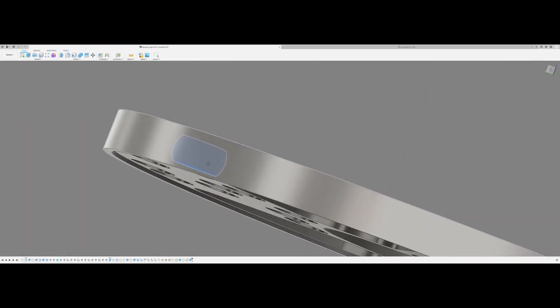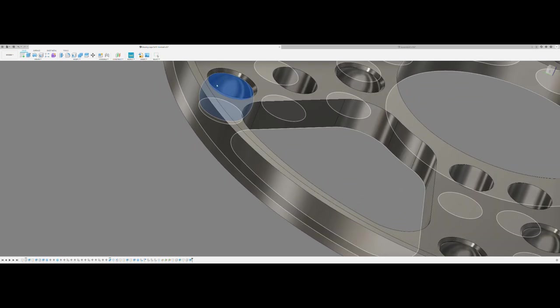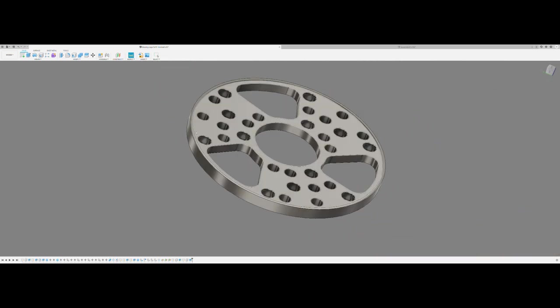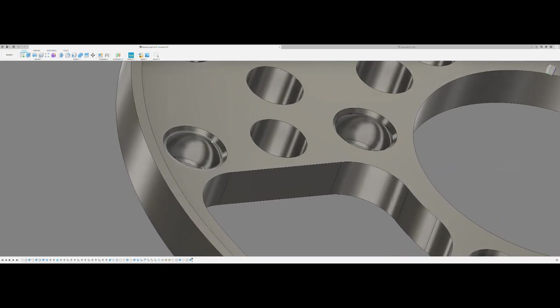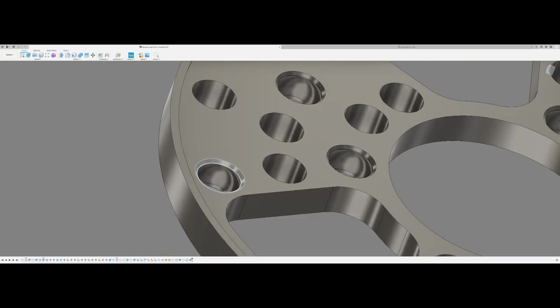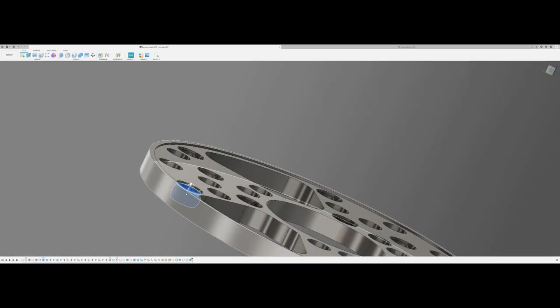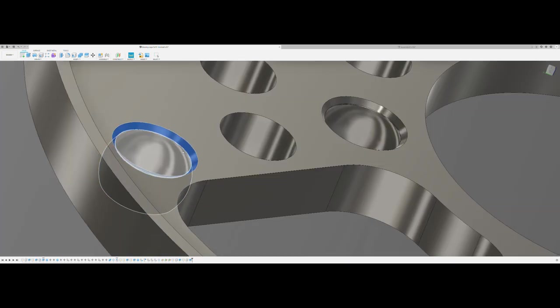One of the challenging things about making these bearings is creating these little spherical pockets. You have to use something called a lollipop mill that's able to get inside and undercut this whole area. Then on the tops I've just got some little chamfers and the hole size is just a little bit smaller than the bearing balls themselves so that they can be pressed into this slot but then not come out. This pocket is a little bit bigger than the bearing ball so it can float.